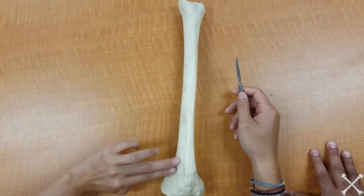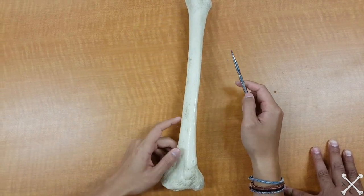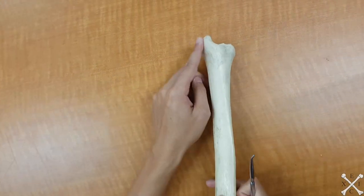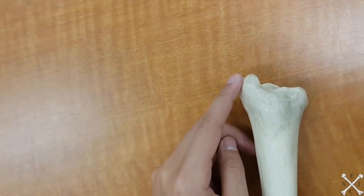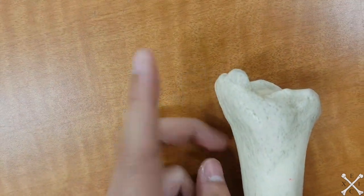The shaft would be basically this whole area right here. The medial malleolus is this big bump right here at the end. If you go down, feel on your ankle, on the medial side of your ankle, that's the bump you feel.